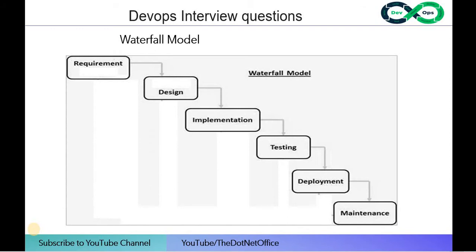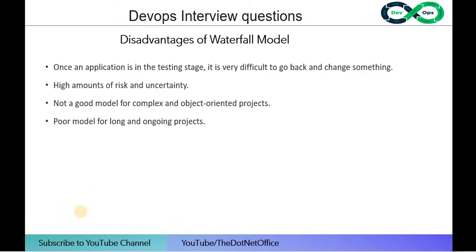The waterfall model is a linear process — requirement, design, implementation, testing, deployment, and maintenance. Its disadvantages include: once in the testing stage it is very difficult to go back and change something; high risk and uncertainty; it is not a good model for complex object-oriented projects because repeatedly going back from testing to development is risky; and it is a poor model for long and ongoing projects.